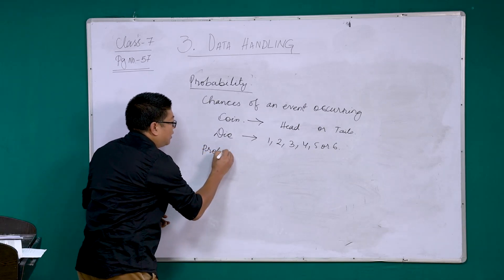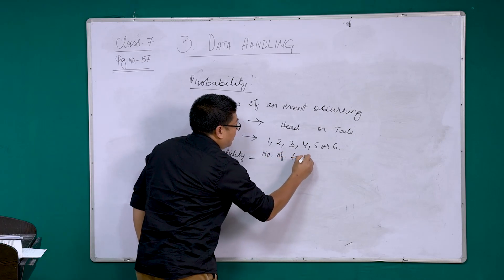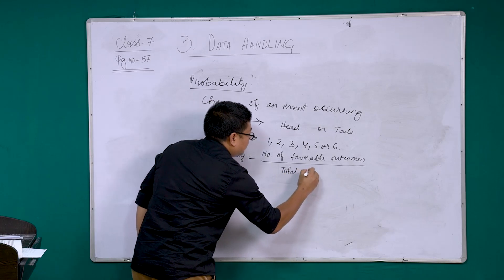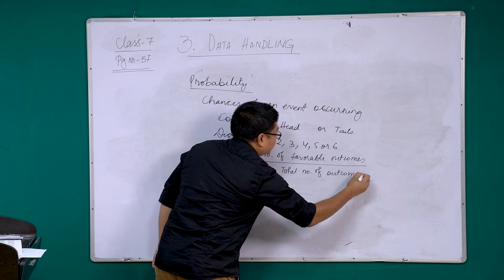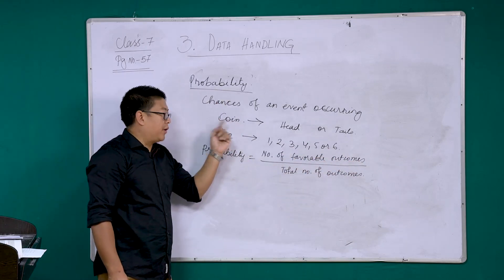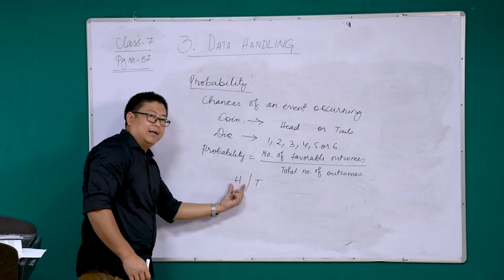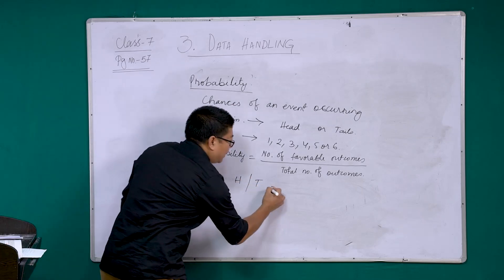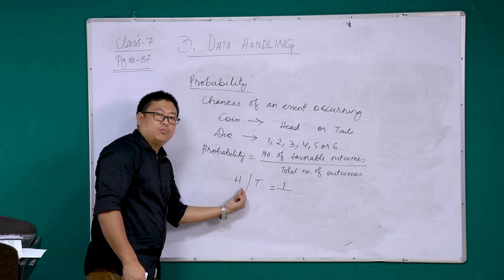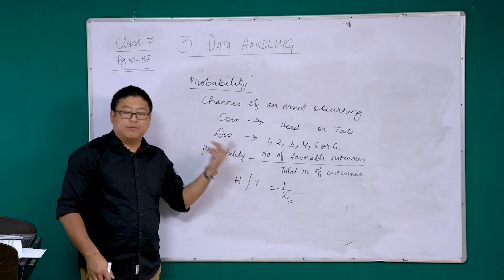To find probability we have a formula: Probability = Number of favorable outcomes divided by Total number of outcomes. For example, when you toss a coin, if I ask what is the probability of getting a head — head will appear only once, so the favorable outcome is 1. The total outcomes are 2 (head or tail). So the probability of getting a head is 1/2.